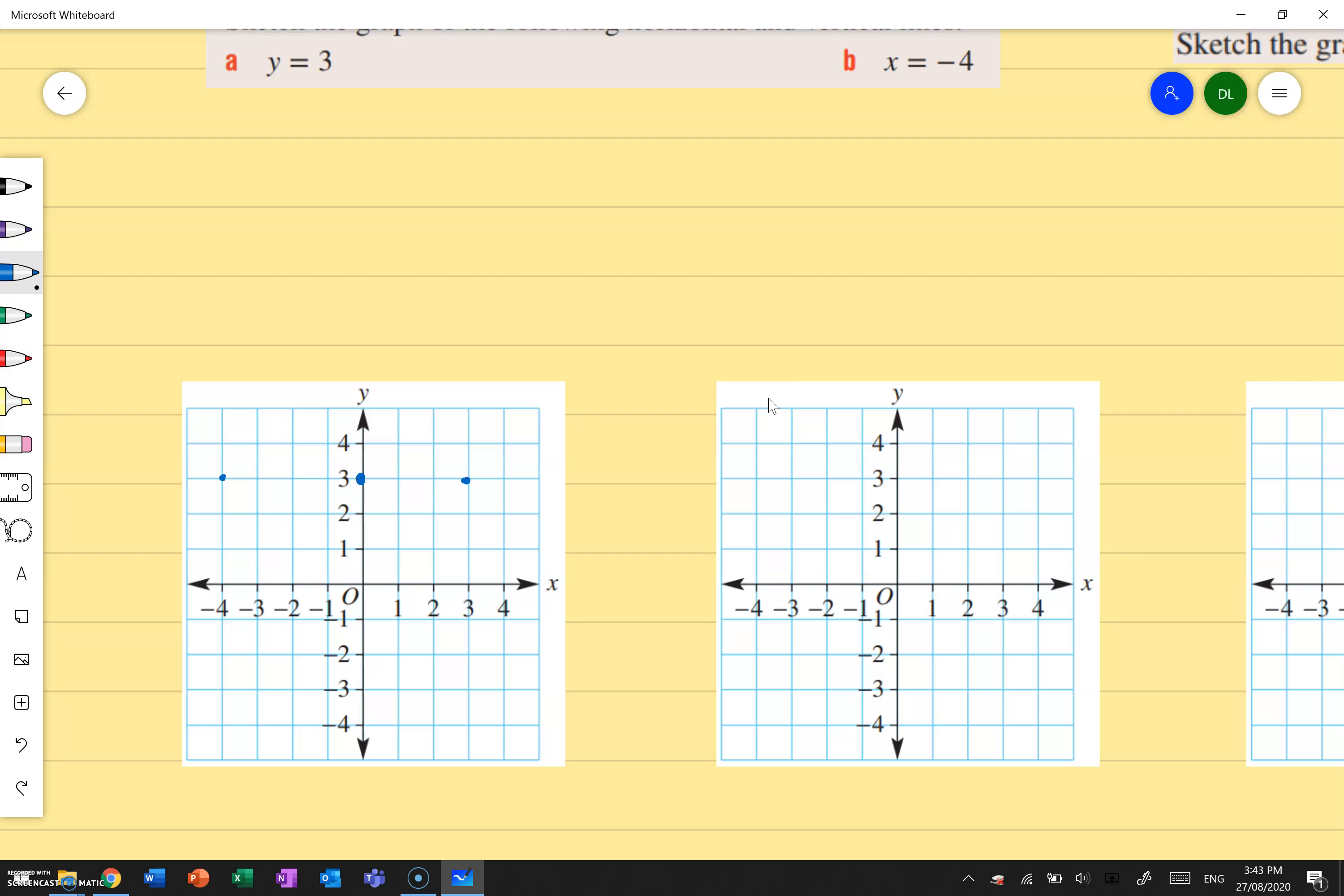So I'm going to say when y equals 3 it's going to be up here, whatever it is it doesn't matter because they're all on the same line. So my horizontal line is going to look like this. That is y equals 3.